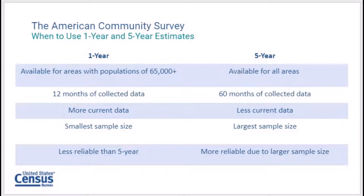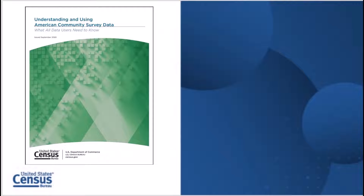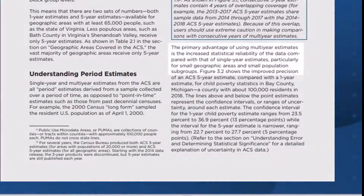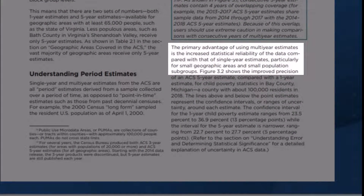Next, if the data user is looking for the most recent or current data, he or she must select the most recent one-year data — that is only an option if the geographic area has a population of 65,000 or more. Next, the data user may be concerned about statistical reliability. As we explained in our ACS handbook, the primary advantage of using multi-year estimates is the increased statistical reliability of the data compared with single-year estimates, particularly for small geographic areas and small population subgroups.